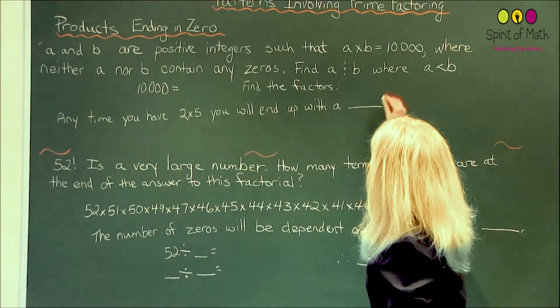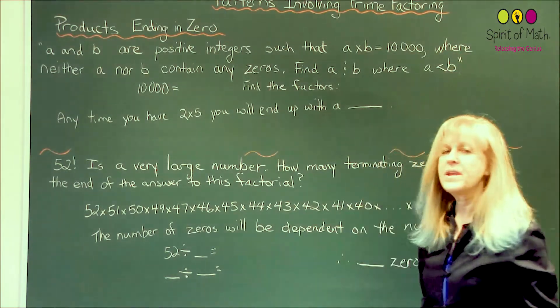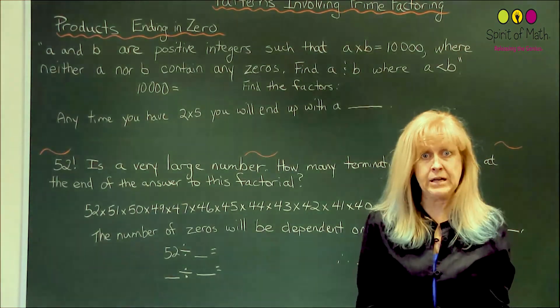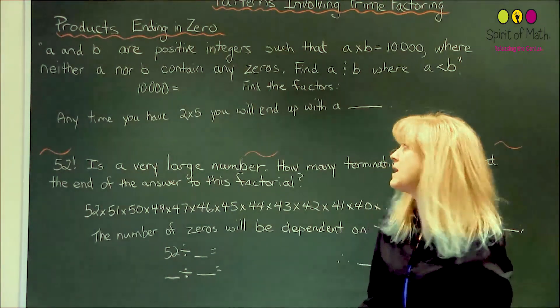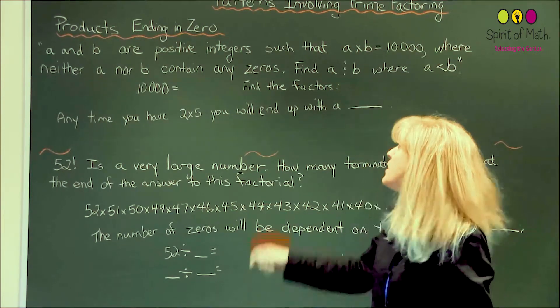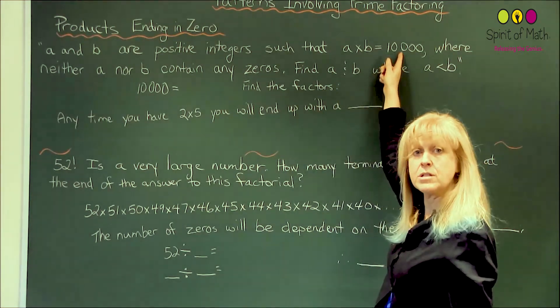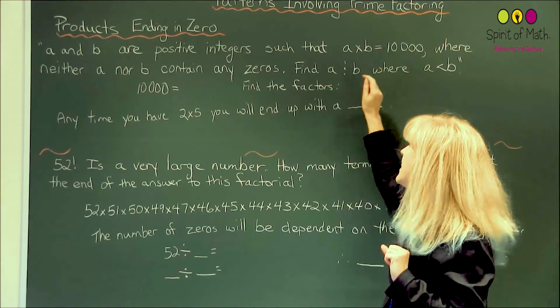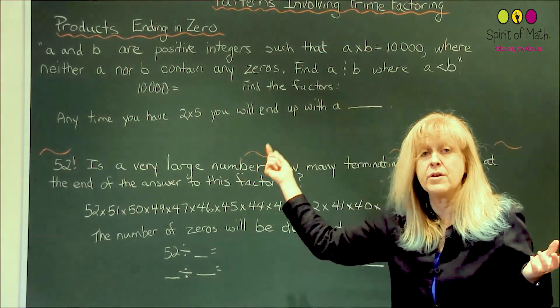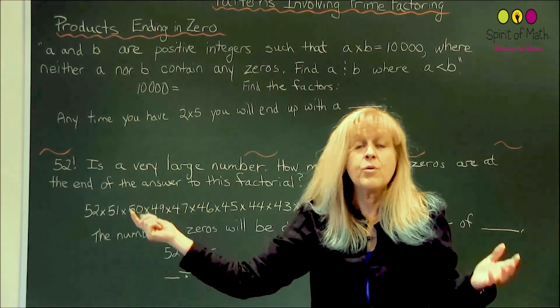Okay, so that's the question. What does that mean? How do I interpret that? Basically, it means that you've got two numbers, A and B. If you multiply them together, they're going to equal 10,000. But the key is that neither A nor B can have a zero in it. So what are those two numbers?